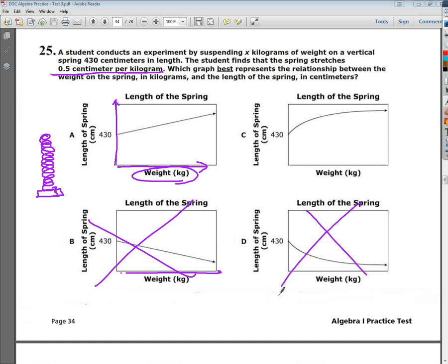So I'm making a comparison between A and C here. The important thing that I had underlined here is that 0.5 centimeters per kilogram, which means that for every kilogram, it will increase the length of the spring 0.5 centimeters, which means it's doing it consistently.